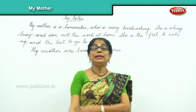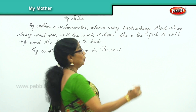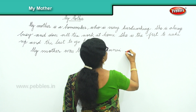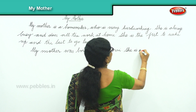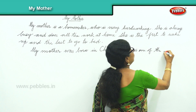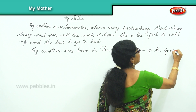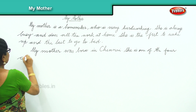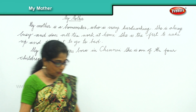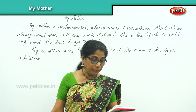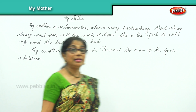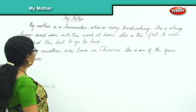She is one of the four children. What does she like to do? She's a very good cook and a singer — she likes to sing.